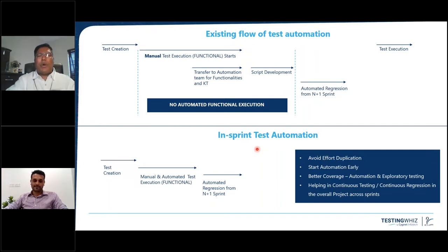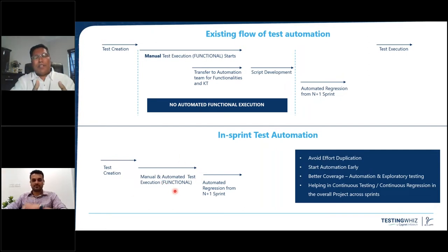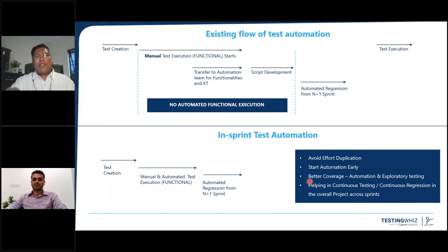The expectation includes that testing should be an integration of automation and manual together, with a complete regression set of test cases the moment we move into N+1. We want to avoid duplication, start automation early, achieve better coverage, and enable continuous testing and continuous regression. But in reality, we are nowhere near our expectation level — some programs have portions of that, but the majority are nowhere near this.